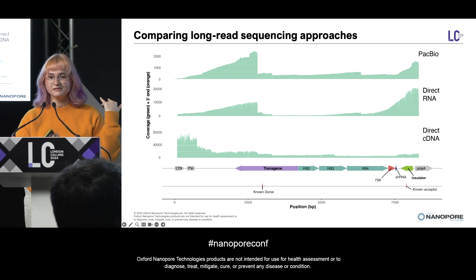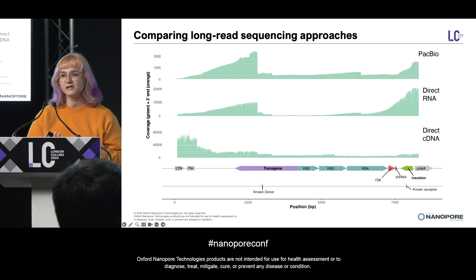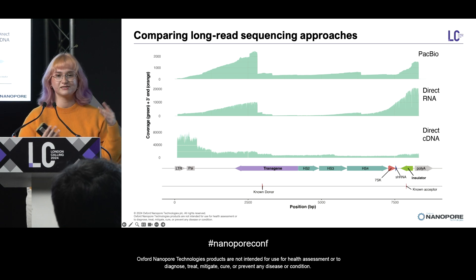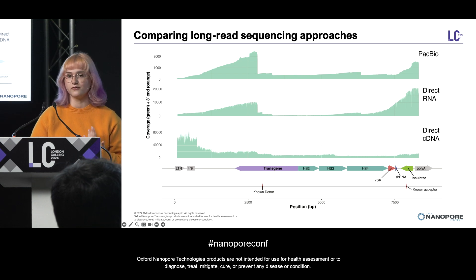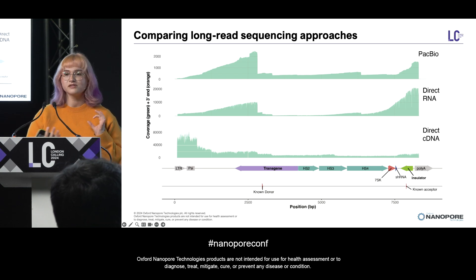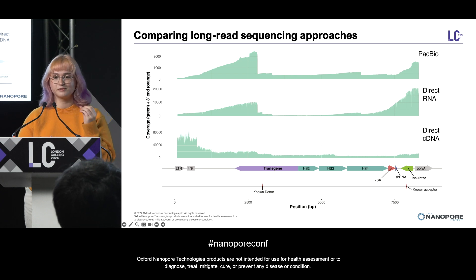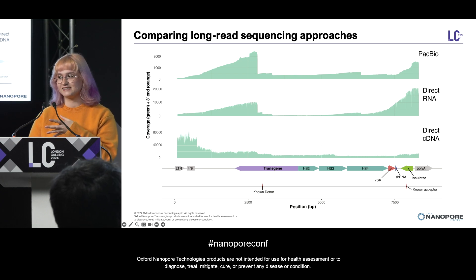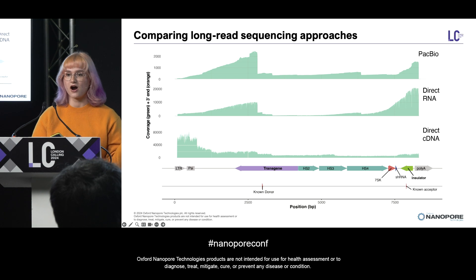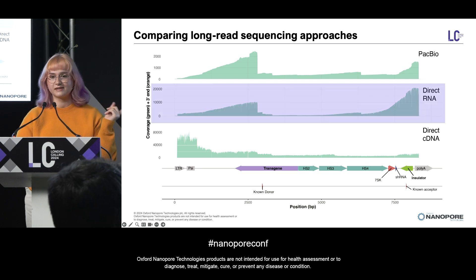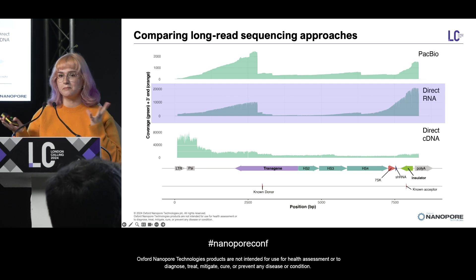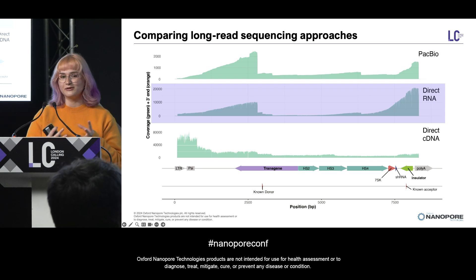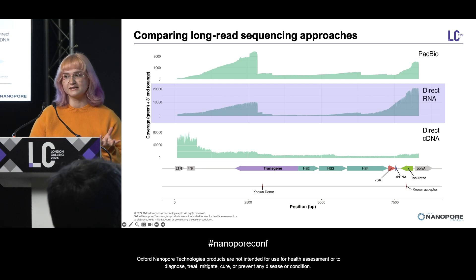The cDNA sequencing looks a bit different because these vectors are really long and have a lot of internal poly A tracts, so we had an issue with internal priming during the reverse transcription. That wasn't ideal because we can't distinguish between internally primed transcripts and actual truncated lentiviral RNAs. For that reason we selected direct RNA as our method of choice, because it gave us a really good number of reads per sample as well as an unbiased look at what was actually going on with our lentiviral RNAs.